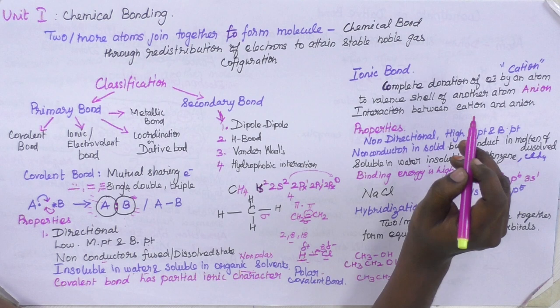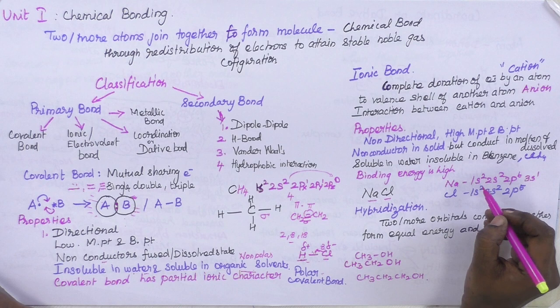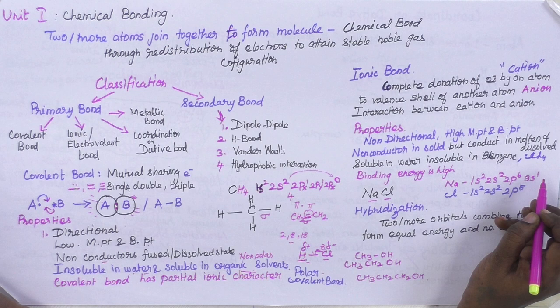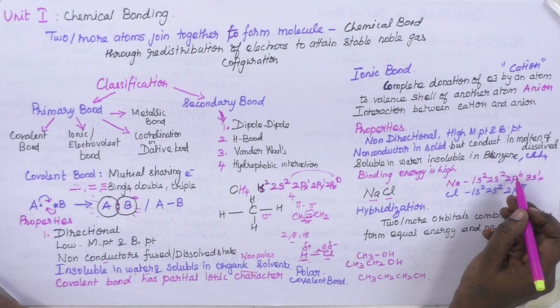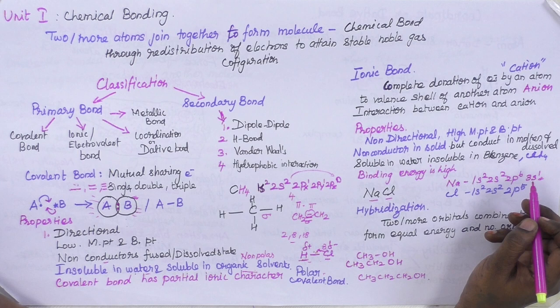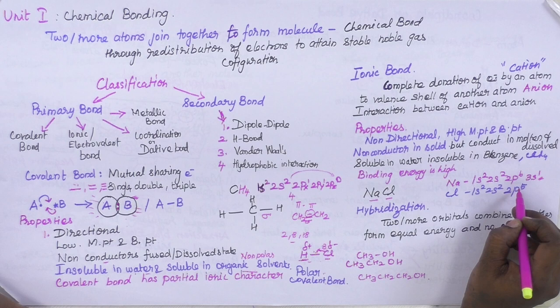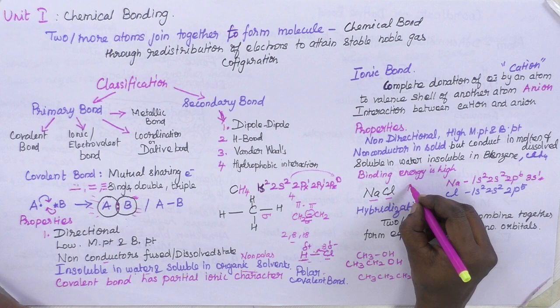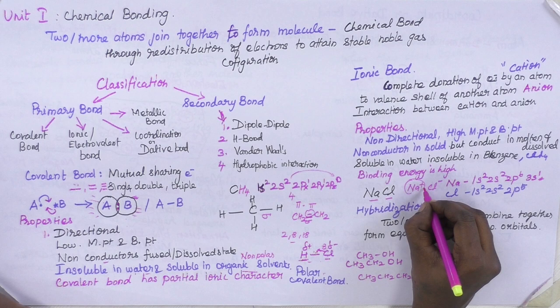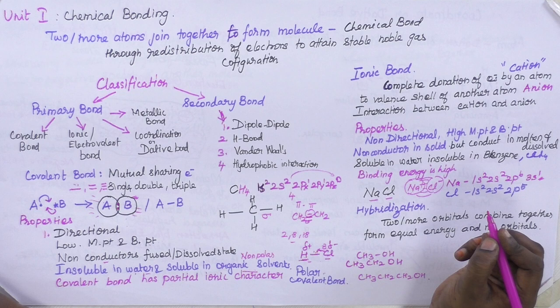Let me take an example: Na and Cl. The electronic configuration of Na is 1s², 2s², 2p⁶, 3s¹. The one electron in the outermost orbital is easily given by sodium to attain noble gas configuration — 8 electrons in the valence shell. Chlorine always needs one electron to complete its octet, so it easily accepts this electron, making Na⁺ and Cl⁻. The electrostatic interaction between the cation and anion is called an ionic bond.